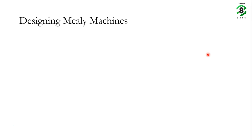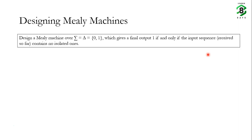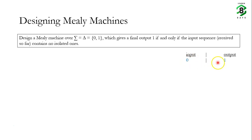Let's start with designing a Mealy machine where the input alphabet and the output alphabet are both {0, 1}, and it gives a final output of 1 if and only if the input sequence received so far contains no isolated ones. An isolated one means a single 1 with zeros on either side of it. If you give it an input sequence of just 0, there are no isolated ones, so the output must be 1.